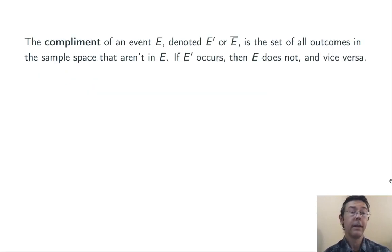The complement of an event, E, usually denoted E prime, sometimes E with a bar over it, is the set of all outcomes in the sample space that aren't in E. So if E occurs, then E prime does not occur, and if E prime occurs, then E does not.